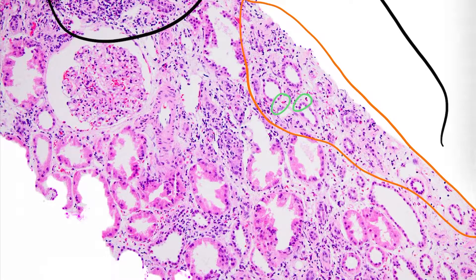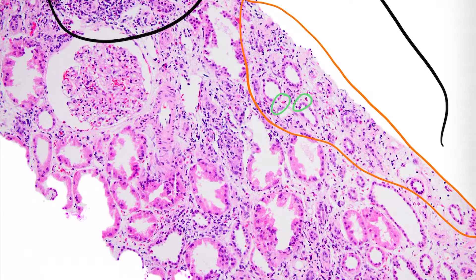This biopsy demonstrates moderate interstitial inflammation, about 30 to 40 percent of the entirety of the unscarred cortex, consistent with an I2, and as we saw earlier, demonstrated moderate tubulitis. These two findings put together, in the absence of SV40 staining or positive BK titers, are compatible with acute T-cell mediated rejection, Banff grade 1A.